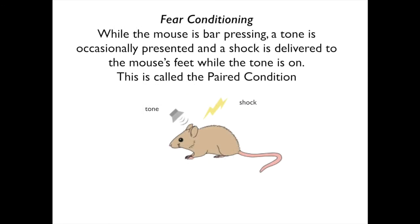While the mouse is bar pressing, a tone is occasionally presented and a shock is delivered to the mouse's feet while the tone is on. This is called the paired condition, because the tone is paired with the shock.